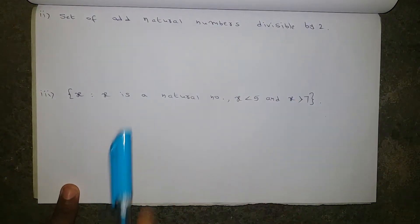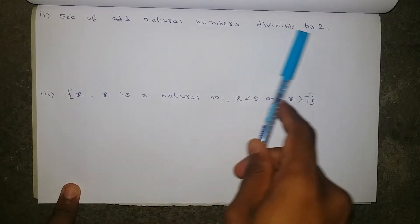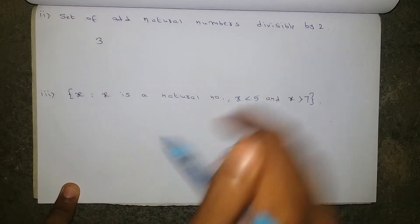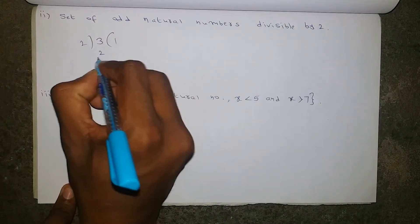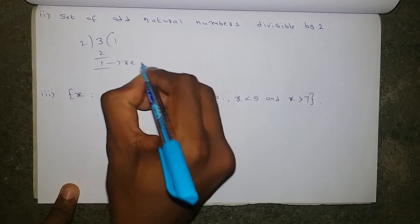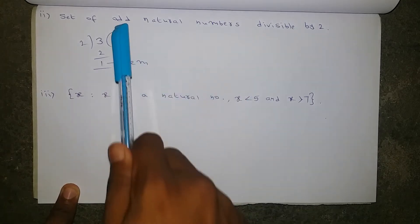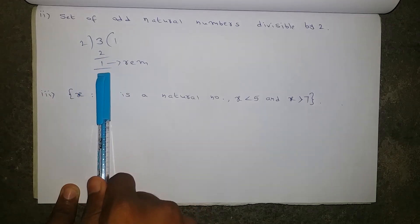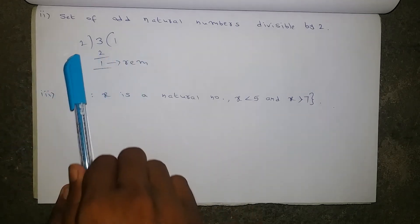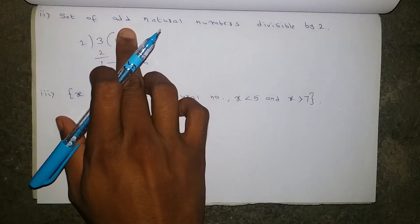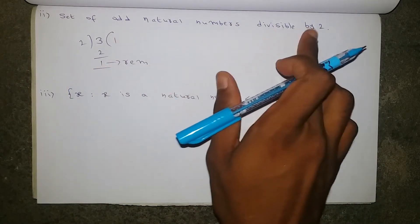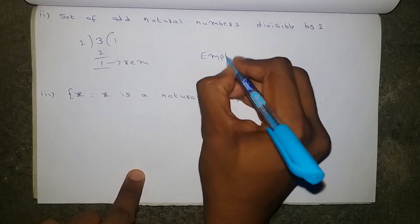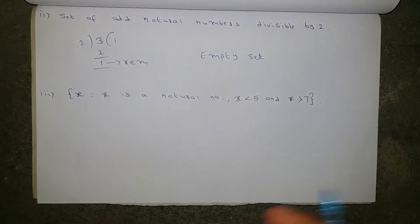Second one: the set of odd natural numbers divisible by two. I'm taking an odd number — 3 — and dividing by two. Two ones are two, three minus two, one is the remainder. So any odd number divided by two will definitely leave a remainder of one — it is not at all divisible by two. So no odd number is divisible by two exactly. So it is an empty set.